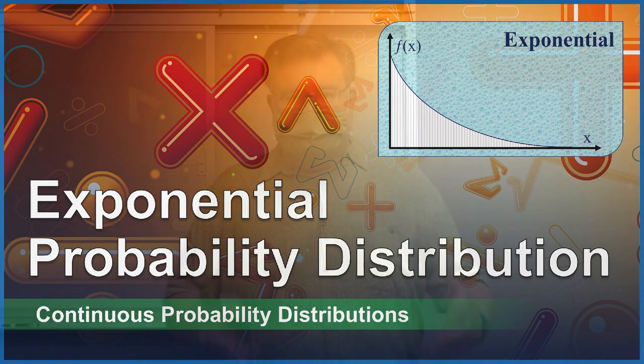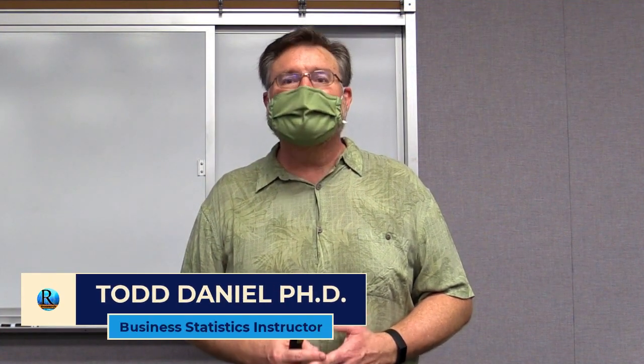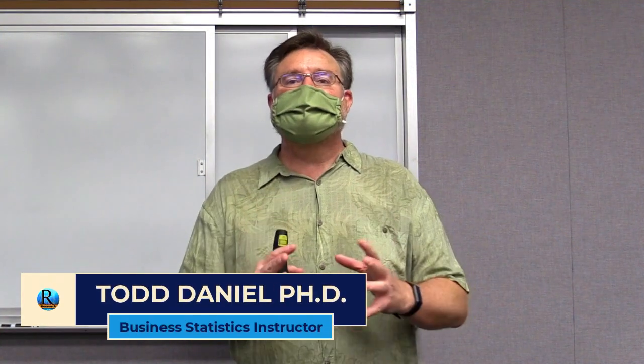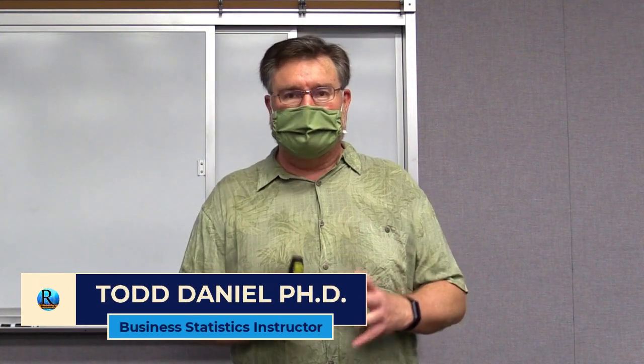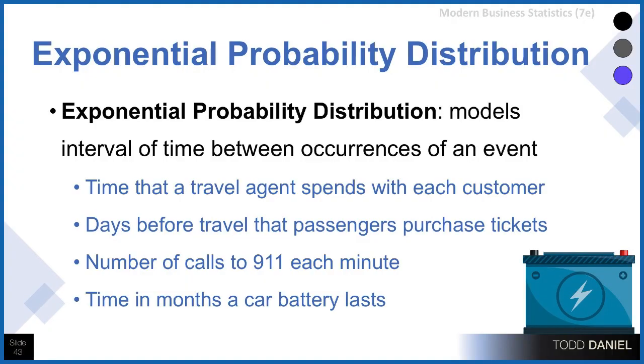The third of the continuous probability distributions that we're going to learn about is the exponential probability distribution. The exponential probability distribution is used to model the intervals of time between occurrences of an event.